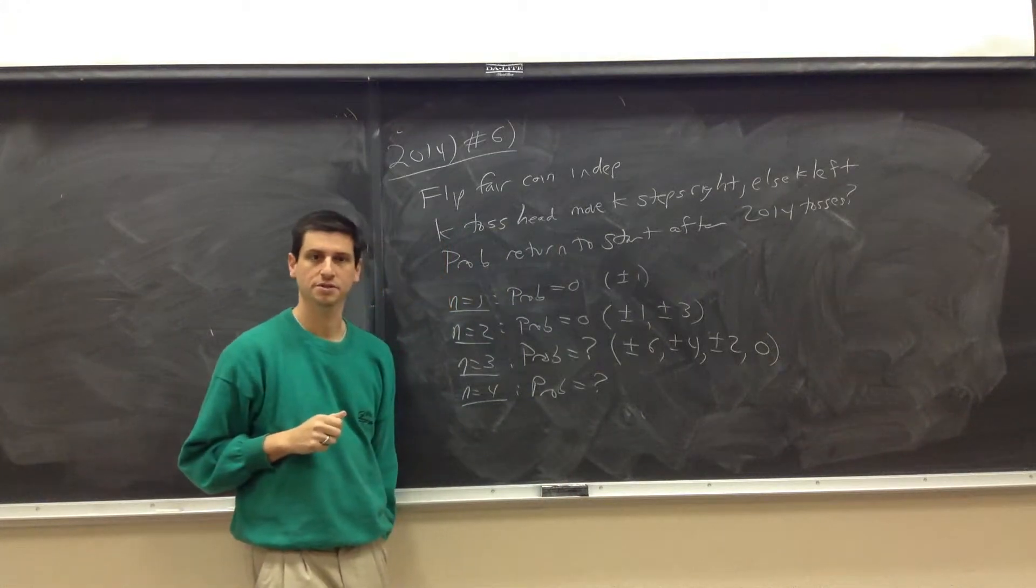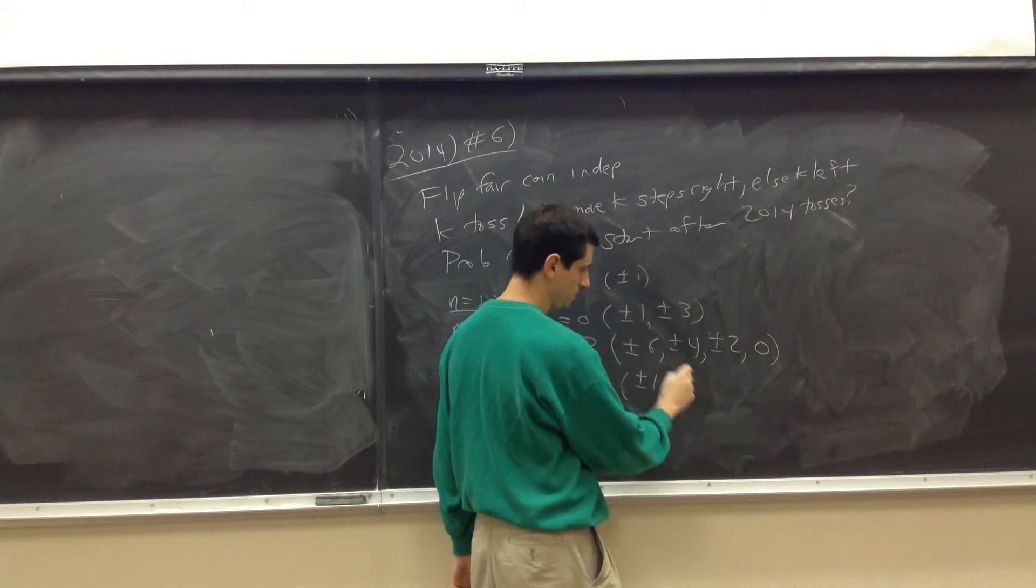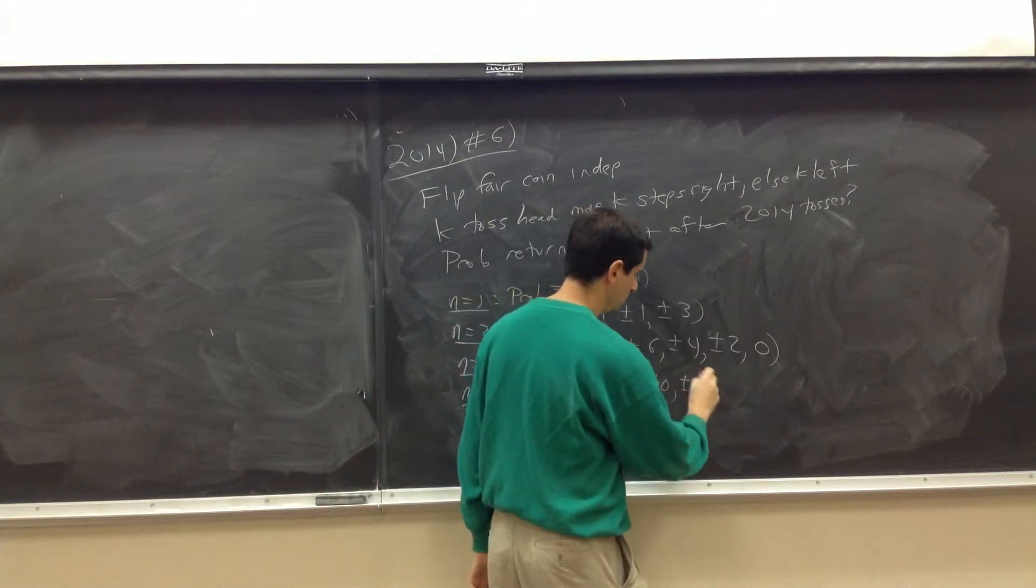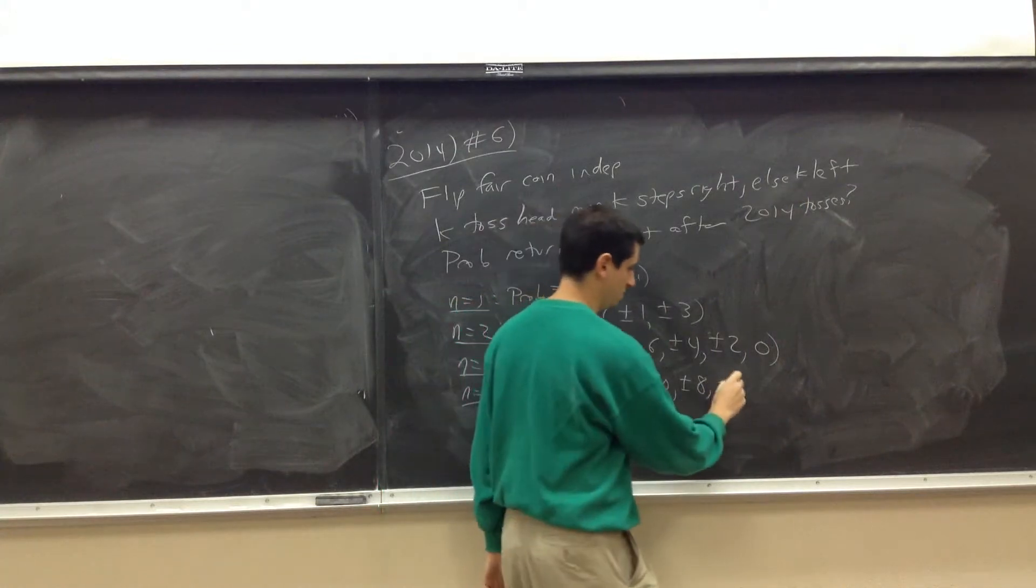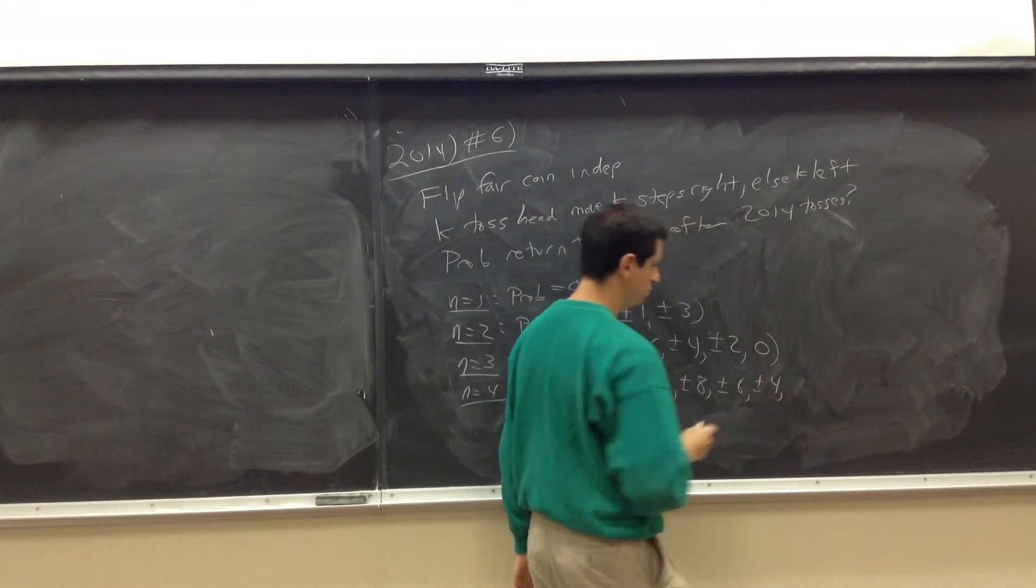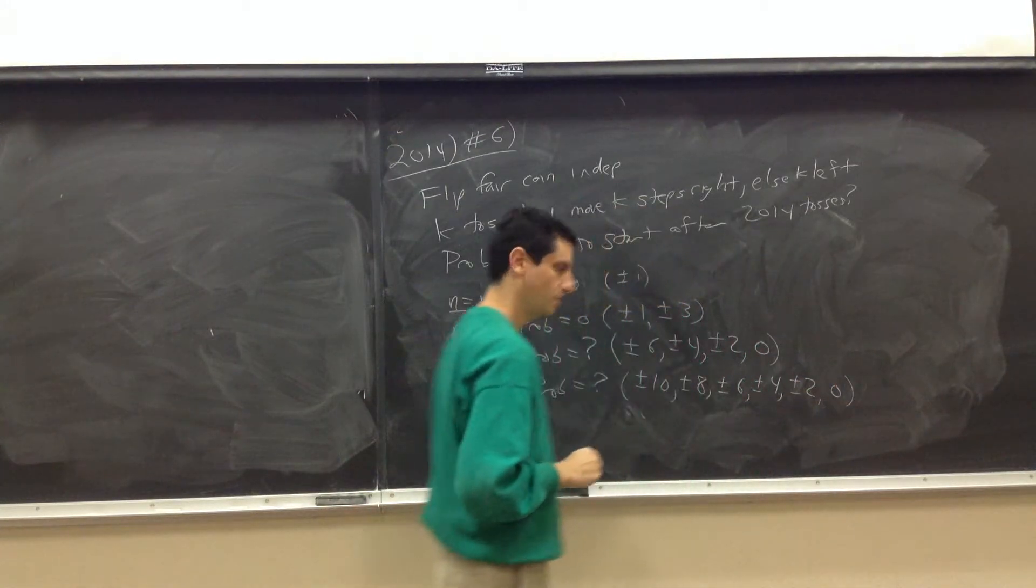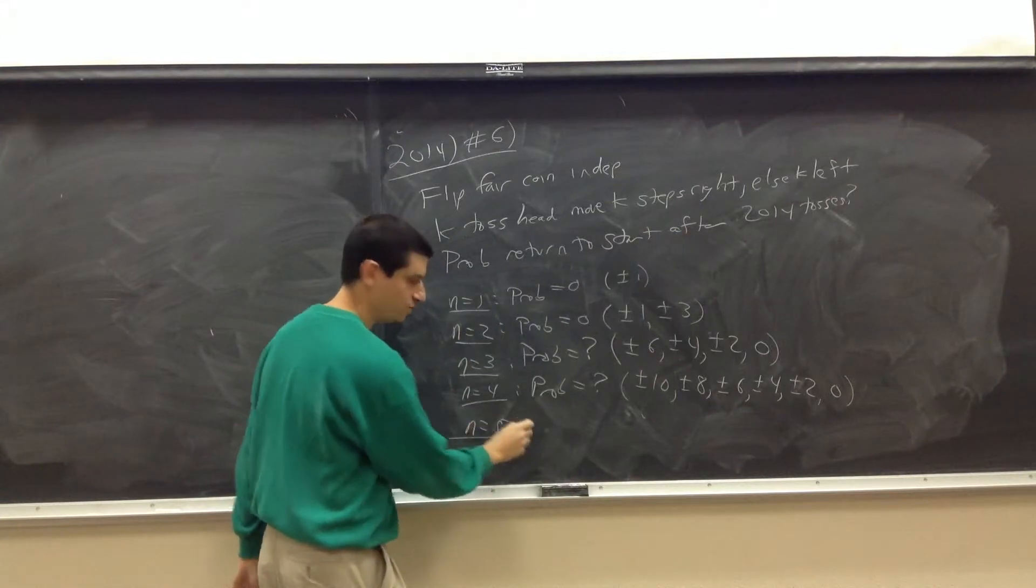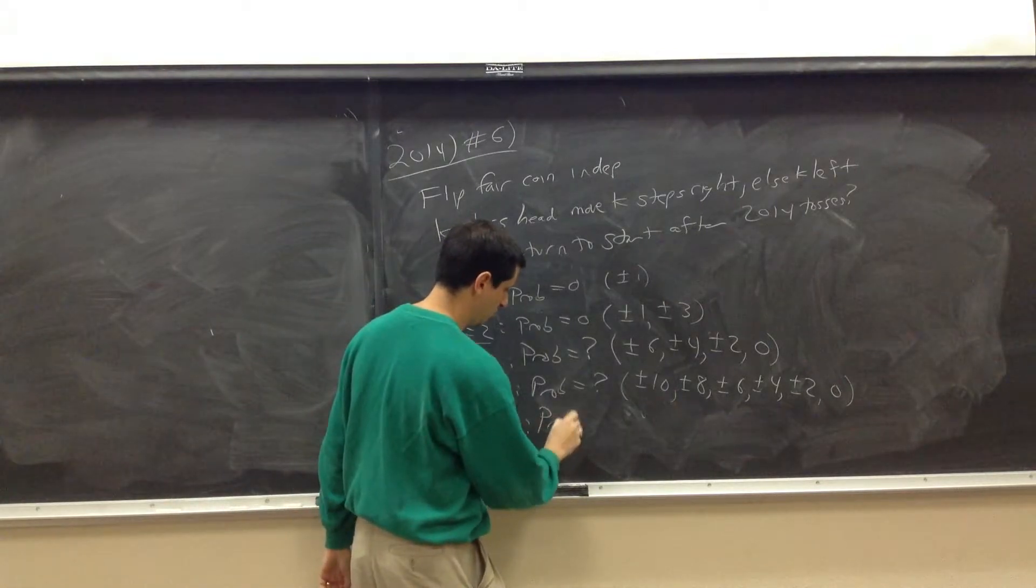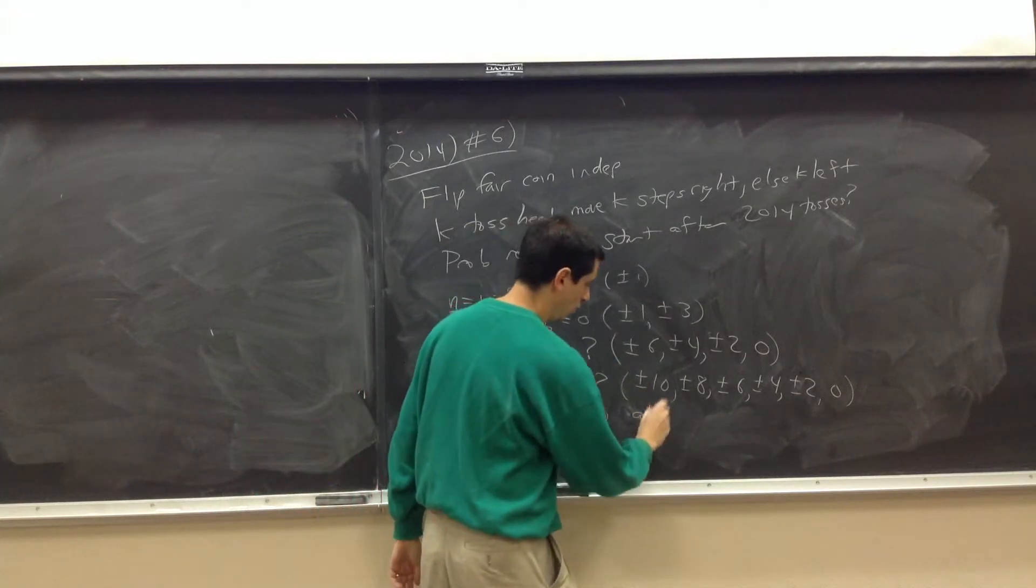Let's do N equals five. What's the probability that we're home after five tosses? Zero. Because now we're adding an odd number. And so now, all is odd. There's a huge difference between contest problems and real life. Every contest problem, if it's a good one, has to have a somewhat simple solution that has to be the aha moment.